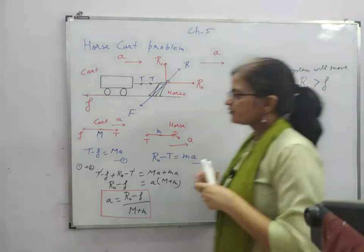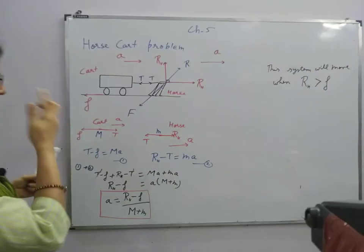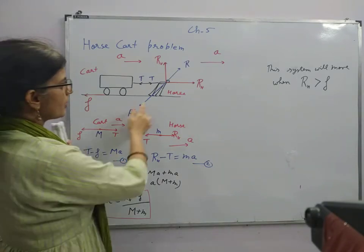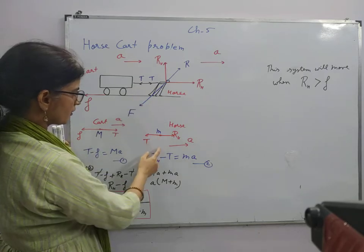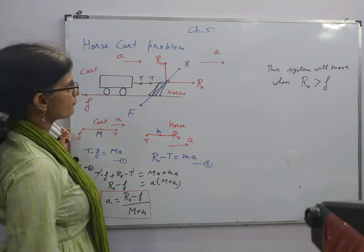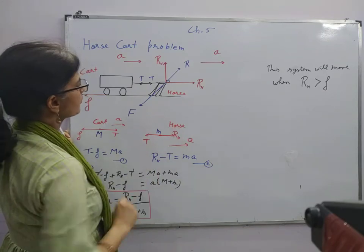Right. The other forces we could have considered. But for 11th standard this much is important over here. So if we would have considered this friction we would have considered this over here. And the resultant forward force will have been lesser than whatever we have considered.